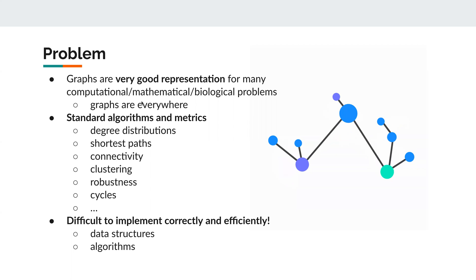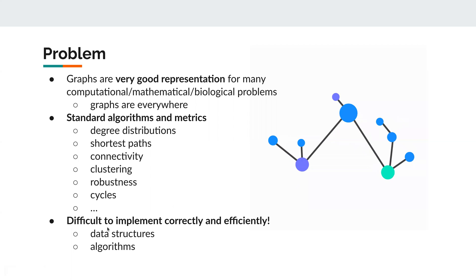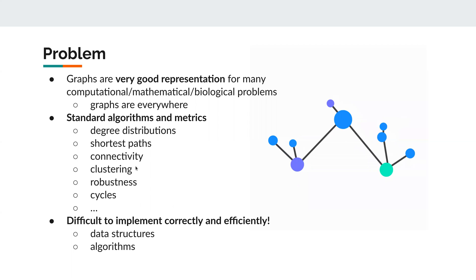Graphs are everywhere. There exist many standard algorithms and metrics to analyze and build graphs — things like degree distributions, finding shortest paths, looking at connectivity, clustering, robustness of transport pathways, and cycles. These are interesting algorithms everyone wants to use, but they're very difficult to implement correctly and especially efficiently. Implementing data structures and algorithms to work with graphs is something we shouldn't have to solve ourselves.